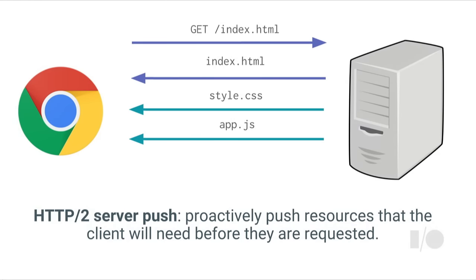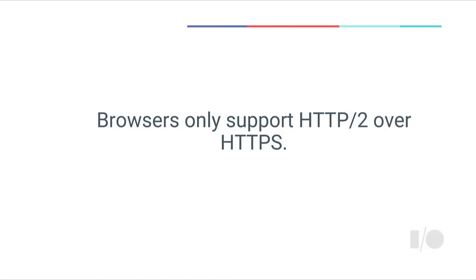Another cool HTTP/2 feature is server push. Normally in traditional HTTP, the browser requests the home page, then parses the HTML and says, now I need the stylesheet, scripts, and images referenced from the HTML. But in HTTP/2, the server can say, you just fetched the home page — I know that as soon as you parse that HTML, you're going to need a bunch of scripts and stylesheets too. So I'm going to proactively push those resources to you, and the client can keep them in its cache so it doesn't have to go over the network to fetch them when it actually needs them.